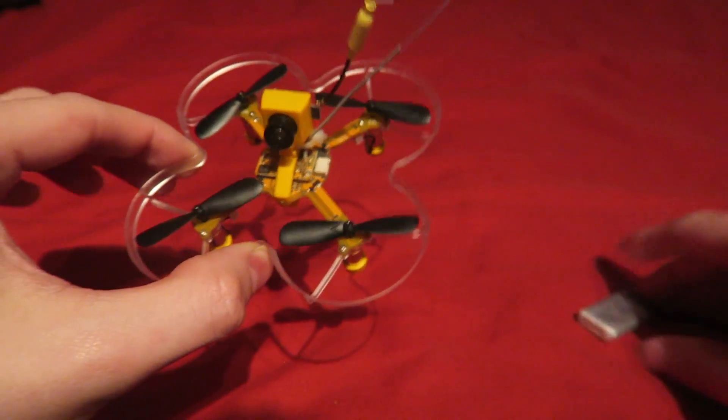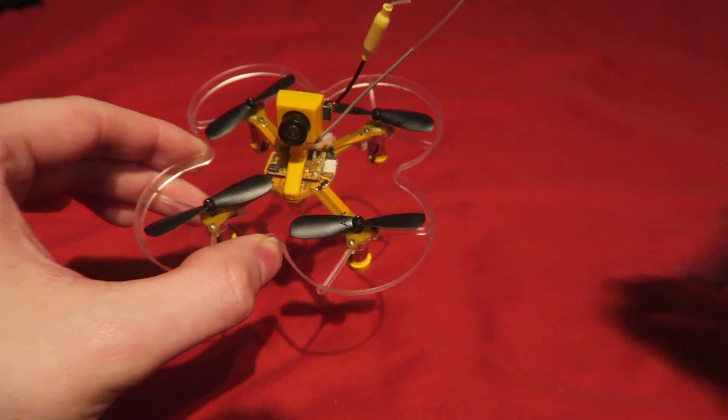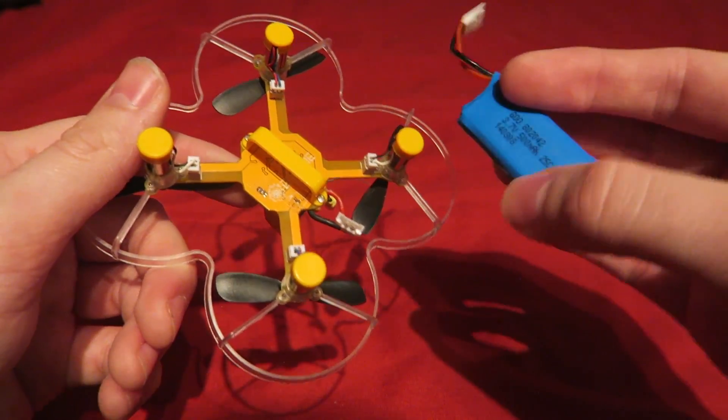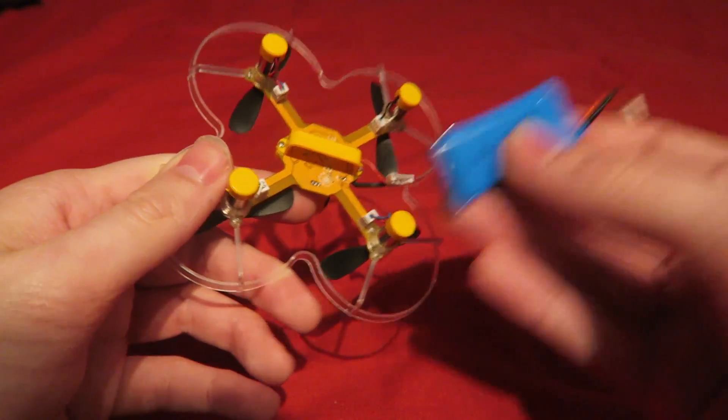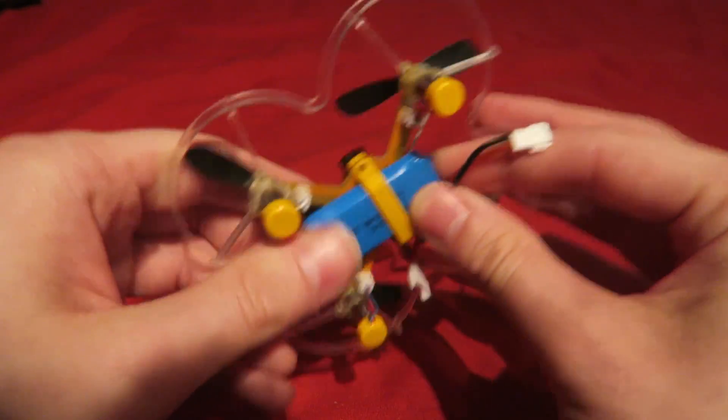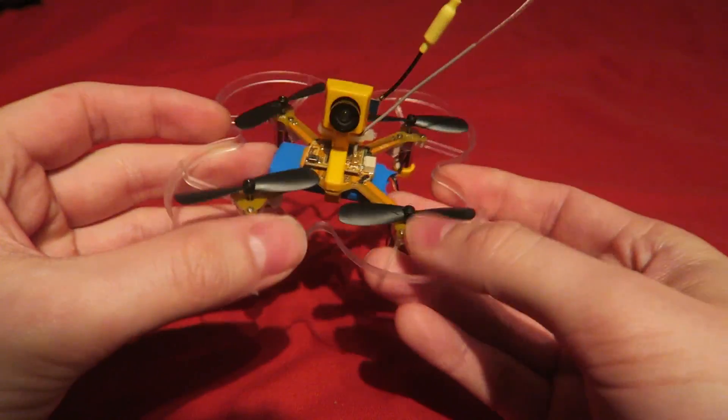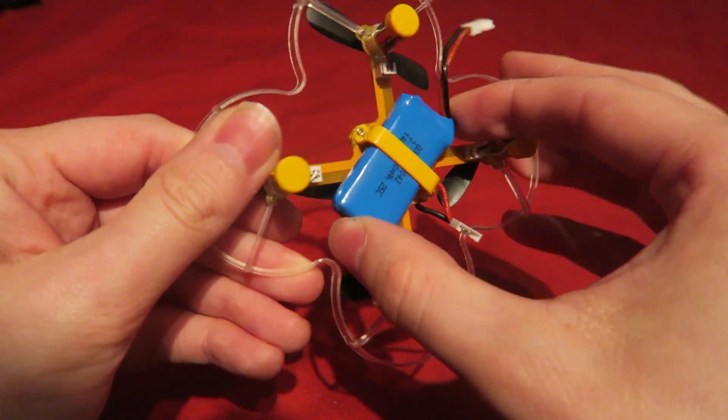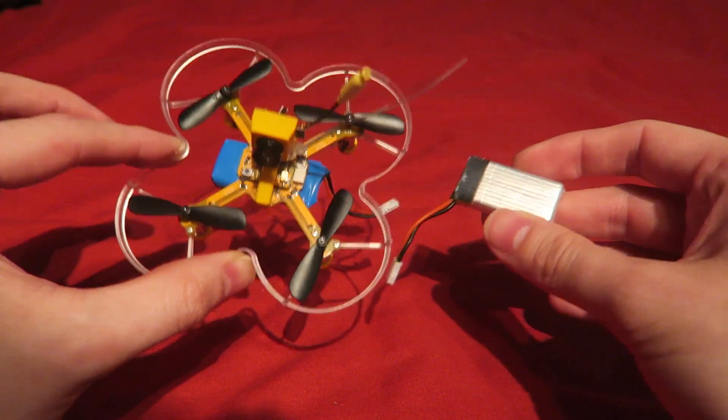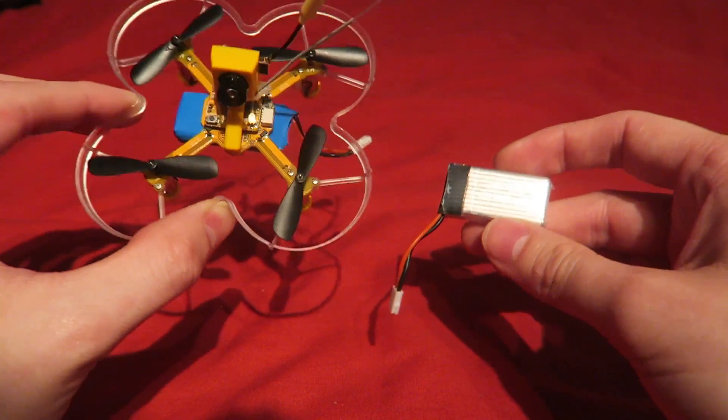However I don't get that problem with this battery which is the Hubsan H107D 500 milliamp, the upgraded battery. I should clarify that I actually I do get the brownout issue but you get a better flight time with this. With this battery it does it pretty much straight away.